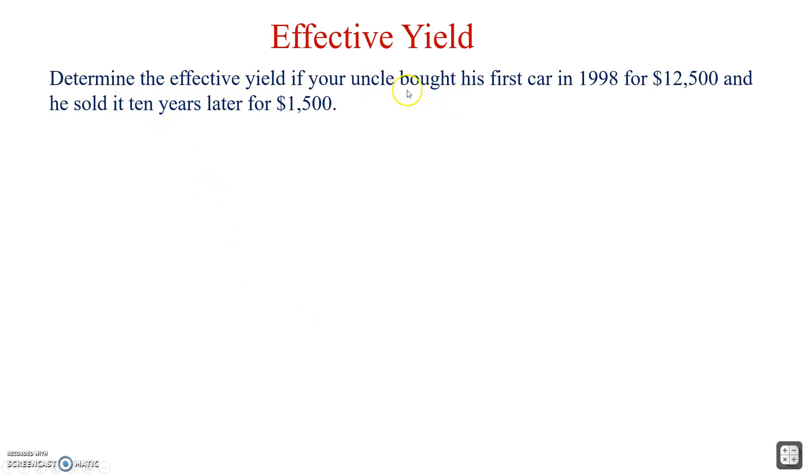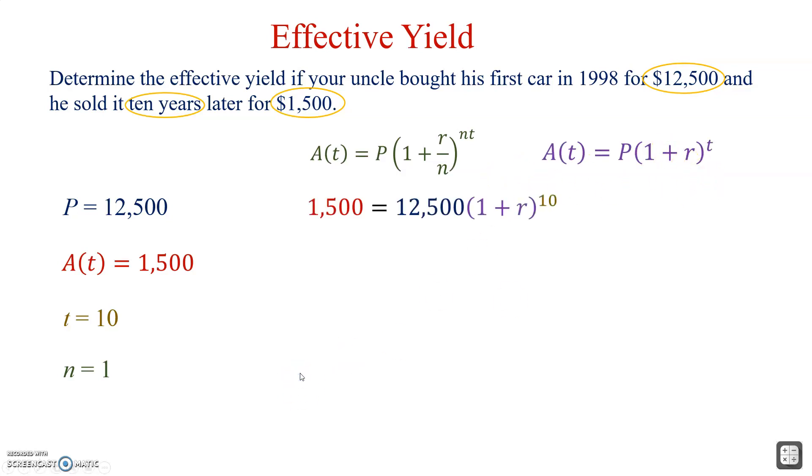Determine the effective yield if your uncle bought his first car in 1998 for $12,500 and he sold it 10 years later for $1,500. We'll use the compound interest formula. Principle is $12,500. The A(t) is $1,500. This is how much we're getting after time has passed. T is 10 because it said 10 years. And N is 1 because we're doing effective yield. We'll use the converted formula. Simply substitute everything in and we'll solve for R.